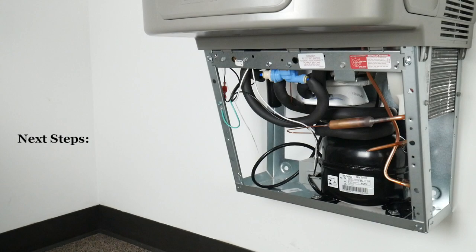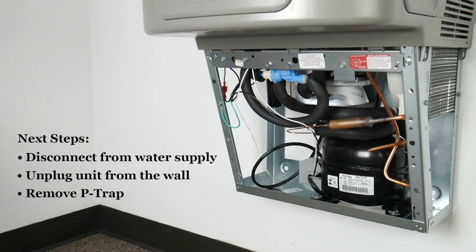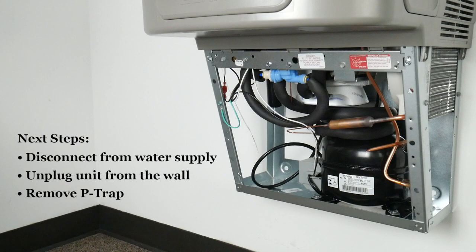Although our sample unit is not connected to any water or electricity, you will have to disconnect the water supply and unplug the unit from the wall. The next step you will need to remove the P-trap which is located on the end of the waste drain.